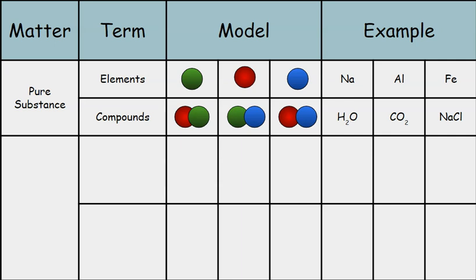So, for example, Na, you have an uppercase and a lowercase. Uppercase N, lowercase A. That's one element. Uppercase C, lowercase L. That's another element in the compound.